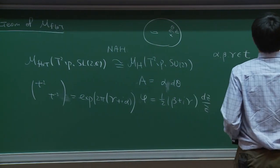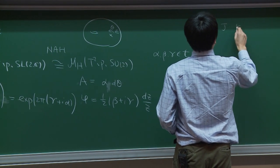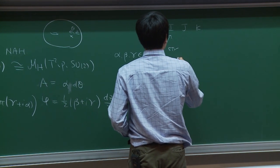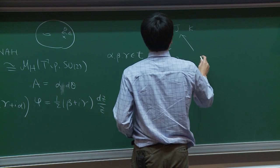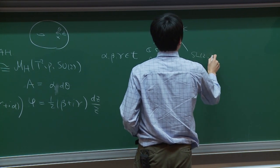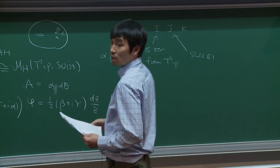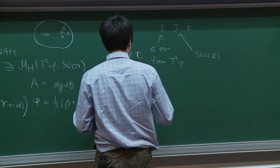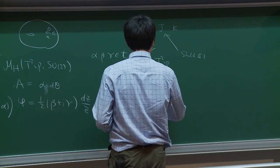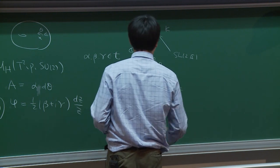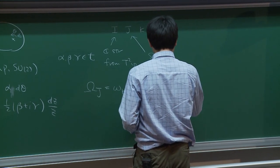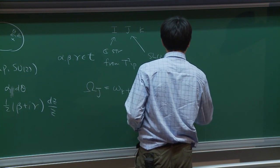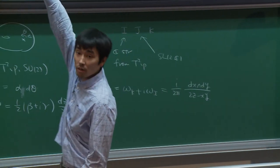Since this is a hyperkähler manifold, we have complex structures I, J, K, where I comes from the Riemann surface T², J comes from the character variety or SL2C. The holomorphic symplectic form ω_K + iω_I is written as i · 2π · dx ∧ dy, expressed in terms of the coordinates x, y, z.